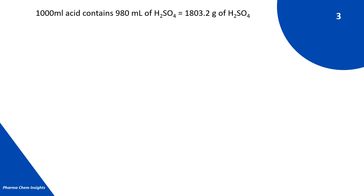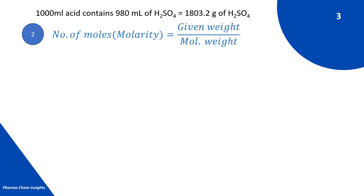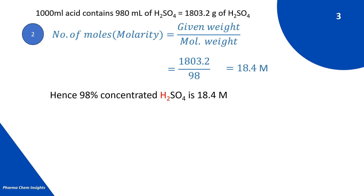The next step is to convert grams into number of moles. Number of moles = given weight ÷ molecular weight = 1803.2 ÷ 98 = 18.4 molar. Hence, 98% concentrated H₂SO₄ is 18.4 molar.